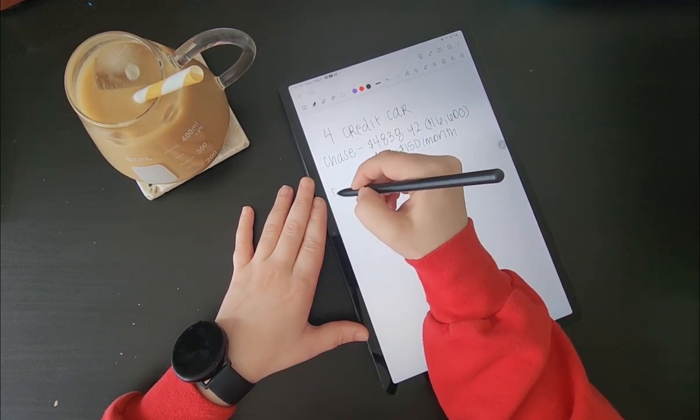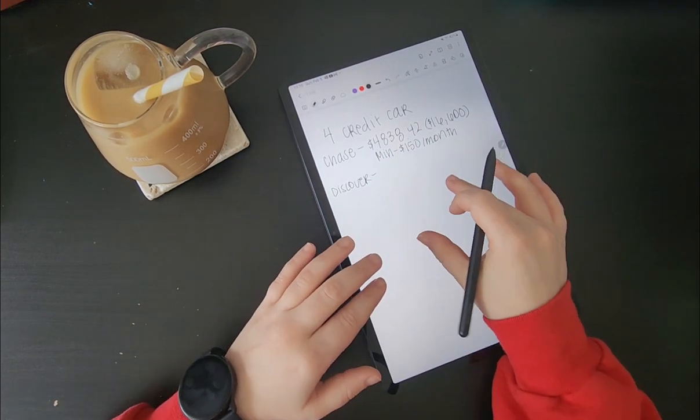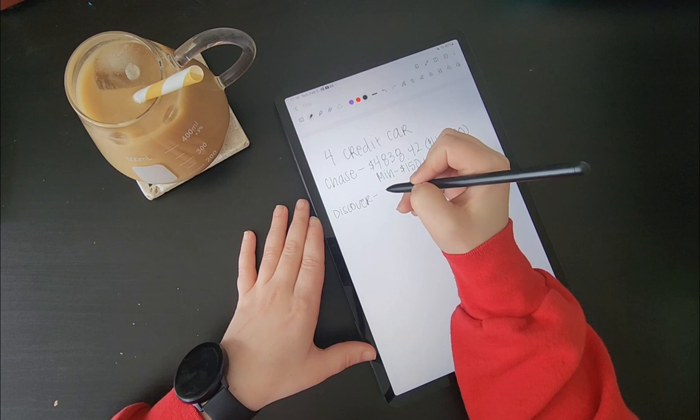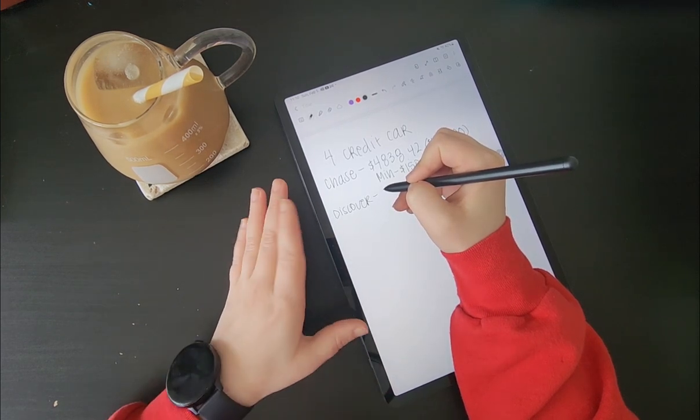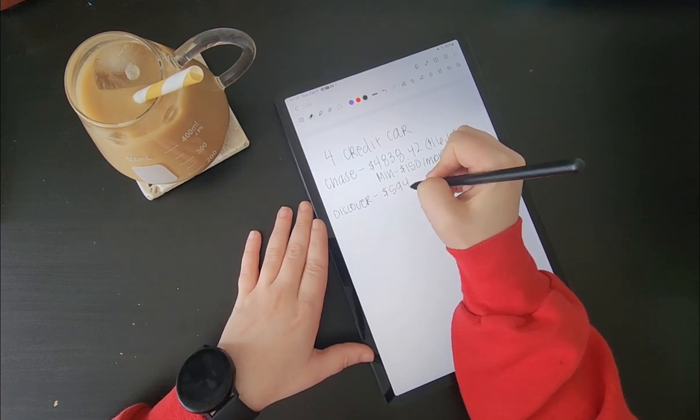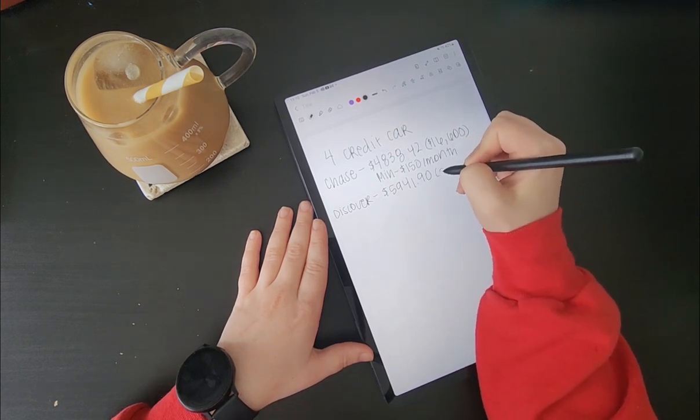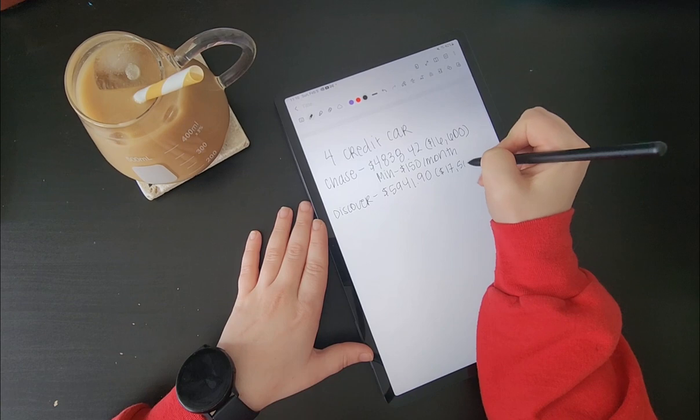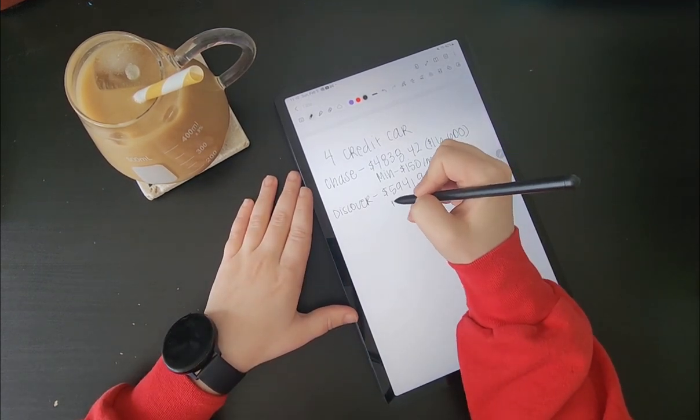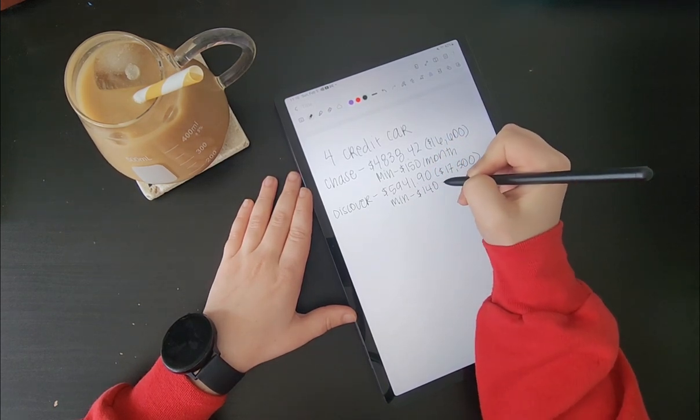My second credit card is my Discover card. And this was the first credit card I ever opened when I was in undergrad to start building my credit. The balance currently on that is $5,941.90 with a total of $17,500 as my credit line. And a minimum of $140 per month.